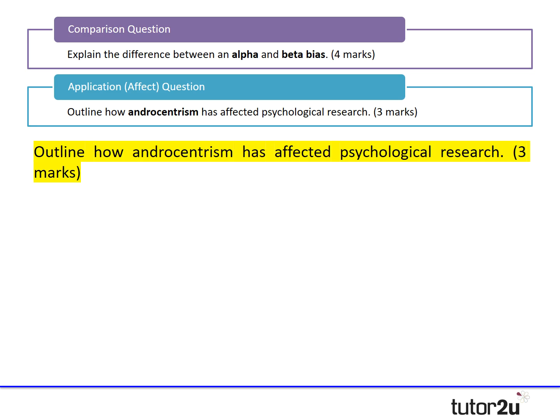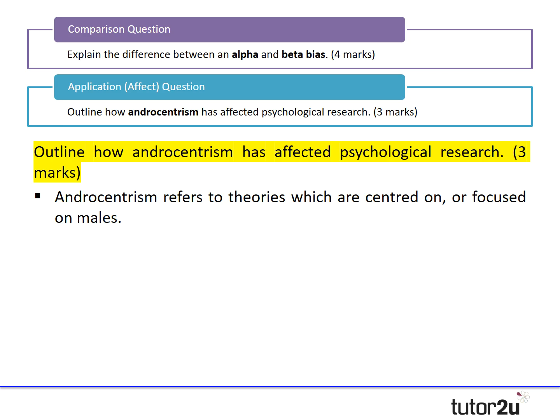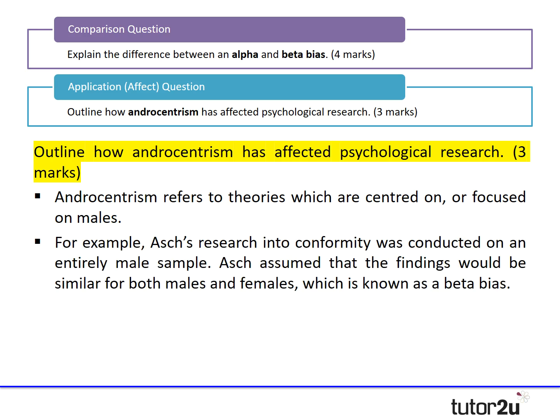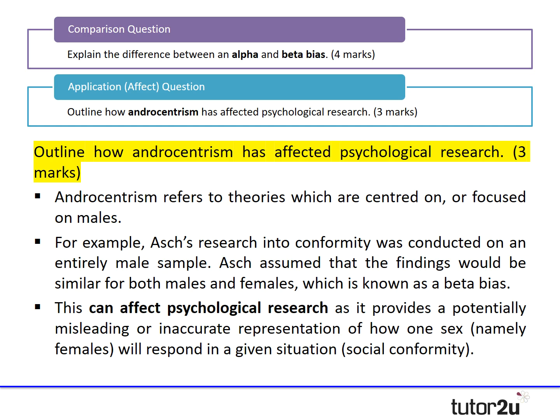For the application question — 'Outline how androcentrism has affected psychological research' — this is a very difficult question because you have to go beyond it. I would start by defining it: 'Androcentrism refers to theories that are centred on or focused on males.' Then give an example: 'Asch's research into conformity was conducted on an entirely male sample, and he assumed the findings would be similar for females — that's known as a beta bias.' Then signpost to the question: 'This can affect psychological research because it potentially provides a misleading or inaccurate representation of how females respond in a particular situation.' That's much more likely to get three out of three than without the example.